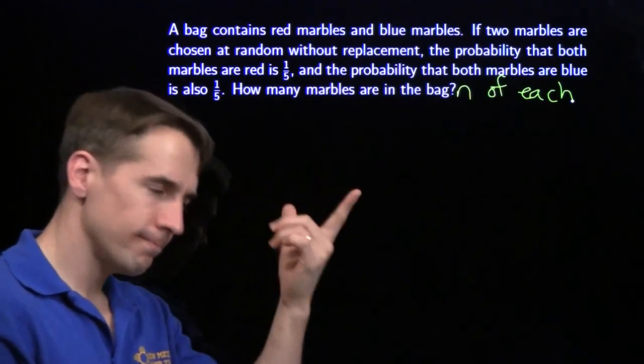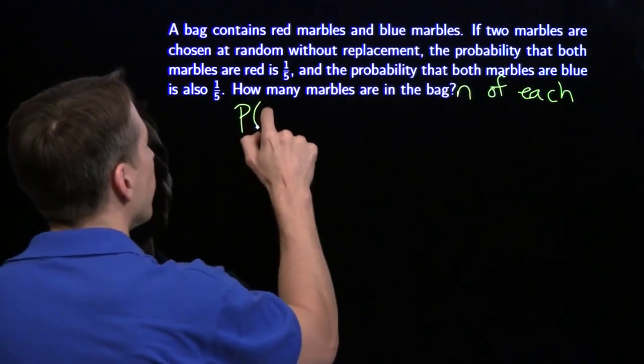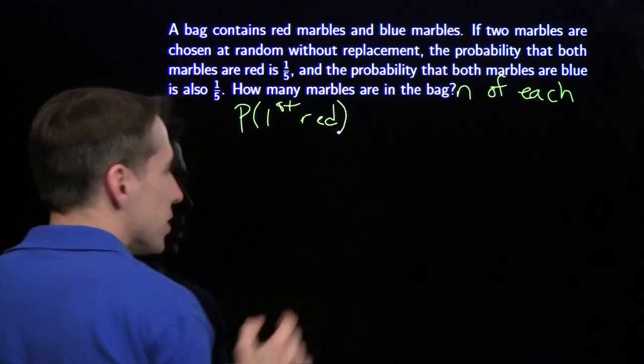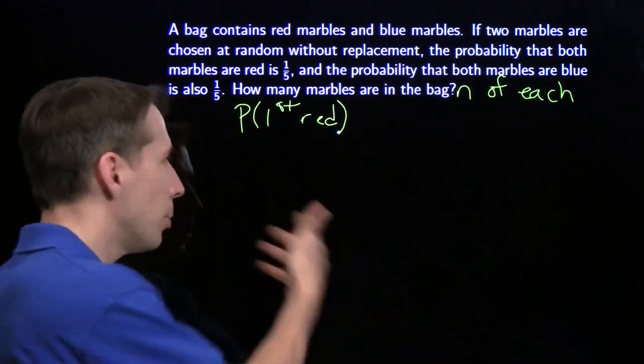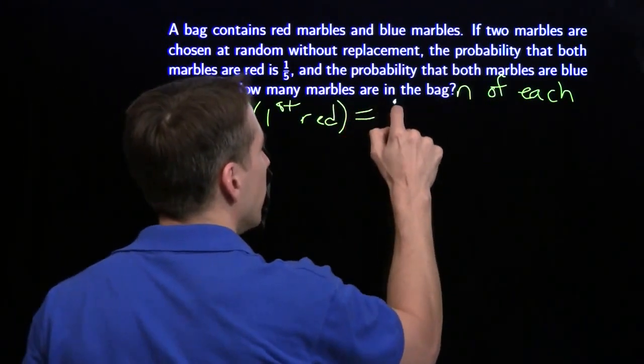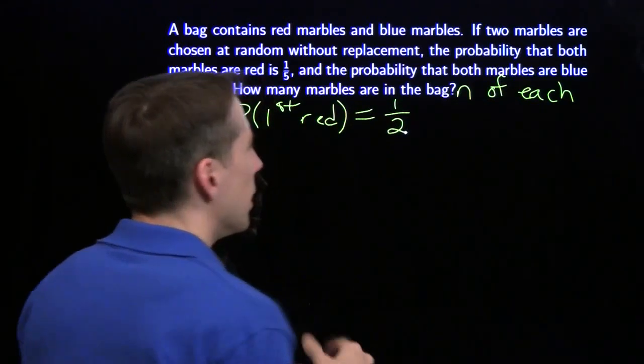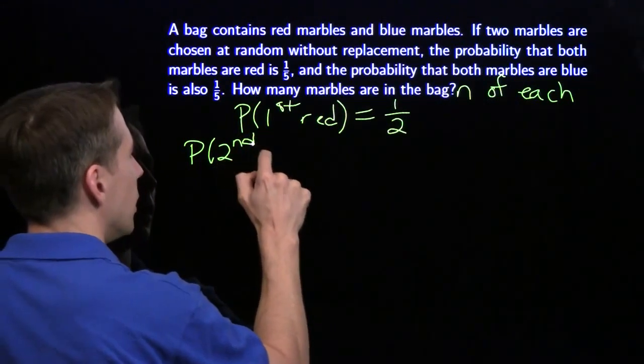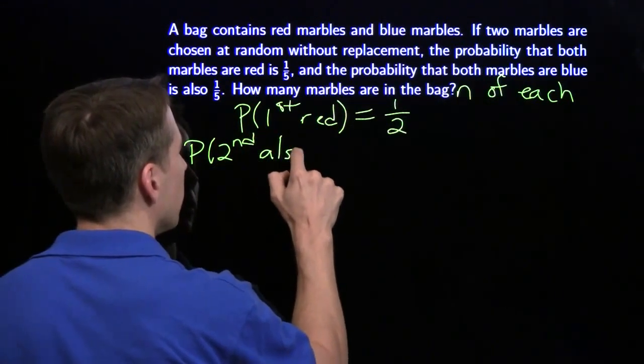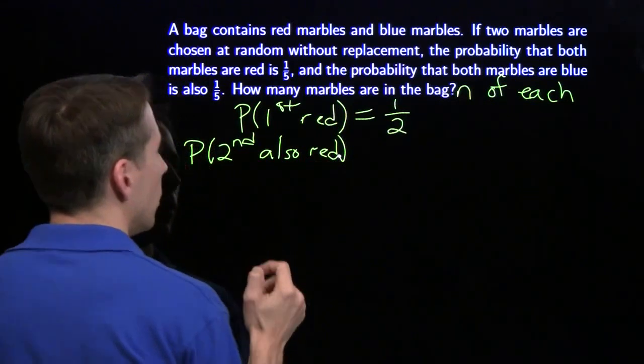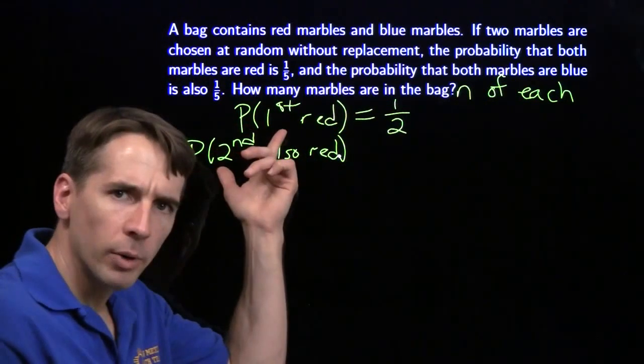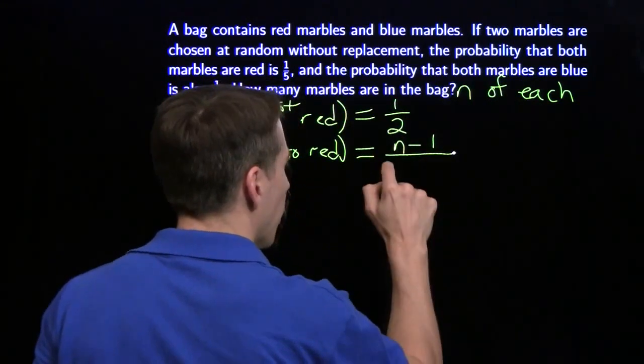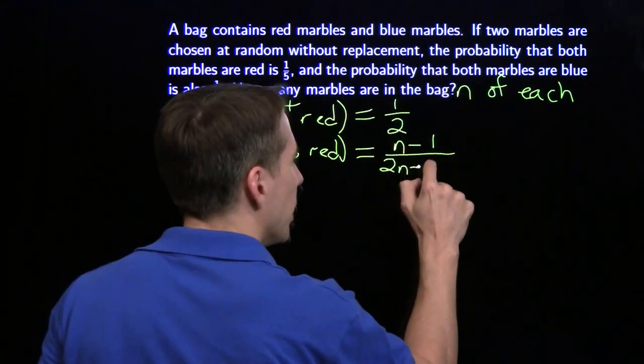So now I've got to write that expression, I'm going to write that expression one step at a time. First step, the probability of the first is red. Well, if I have the same number of reds as I have of blues, the probability of the first one comes out red is just a half. Now the probability of the second is also red. Well, if I've got one red already, that leaves n minus 1 reds in the bag, and I've taken a marble out, so there's 2n minus 1 total.